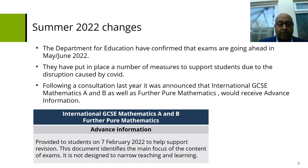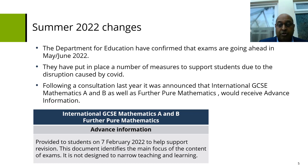Regarding the changes for Summer 2022, the Department of Education have confirmed exams are going ahead. They've put in place a number of measures to support students due to the disruption caused by COVID. It was agreed that our international qualifications for GCSE Maths A, Maths B, and Further Pure Mathematics would receive advanced information. This advanced information was available to everyone on the 7th of February 2022 to help support your revision.